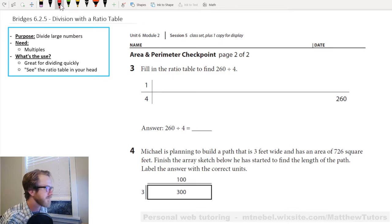So it says fill in the ratio table to find 260 divided by four. Now, I like to have meaning to my numbers. I don't just like them to be numbers. When we use math in real life we have meaning behind them. So, of course, we're going to go 260 means 260 students at Hogwarts and we're going to divide all our students at Hogwarts into four houses.